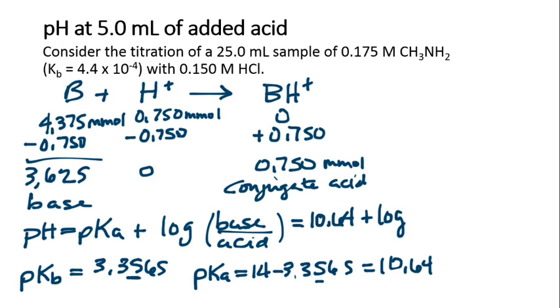The base is on top, 3.625, divided by the moles of acid. So we've got 10.64 plus the base 10 log of 3.625 divided by 0.75, and that's 11.33.